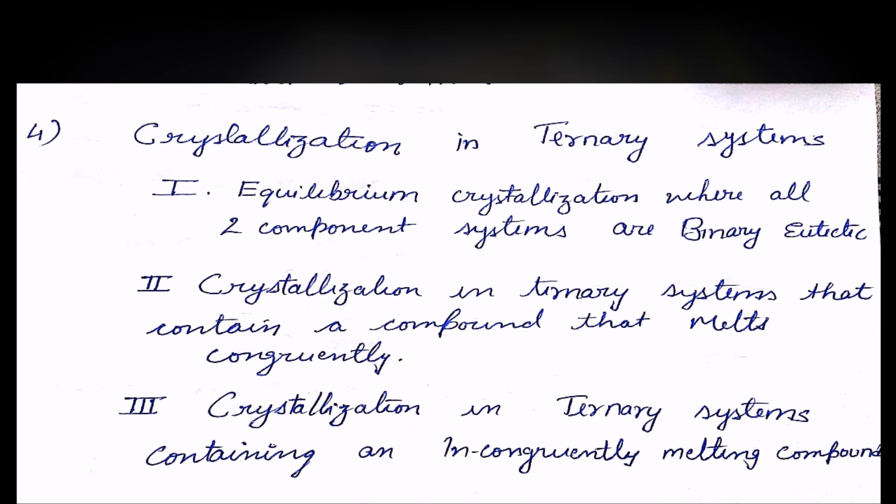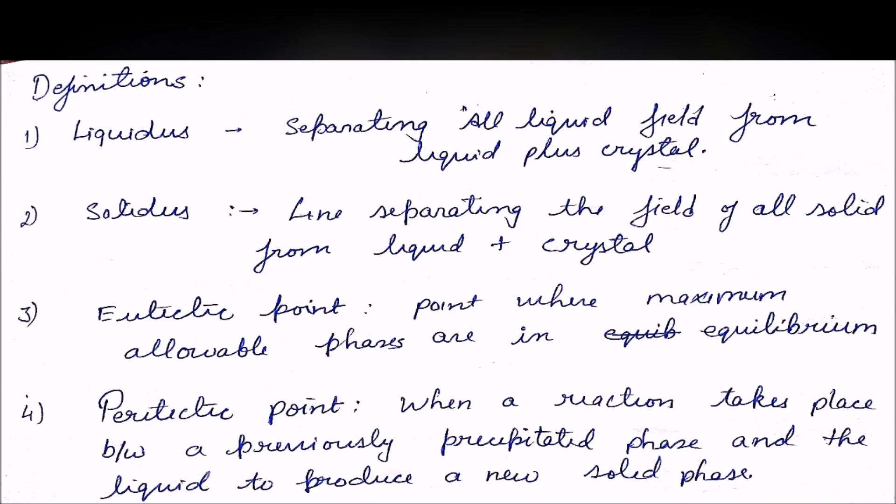This introduction had a few terms you might not be familiar with, like congruent melting, incongruent melting, eutectic, and peritectic. Let's get comfortable with those definitions. First: liquidus is a line or curve separating the all-liquid field from the liquid-plus-crystal field in a phase diagram. Solidus is a line separating the field of all solid from the liquid-plus-crystal field.